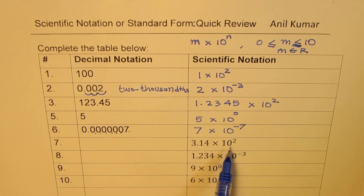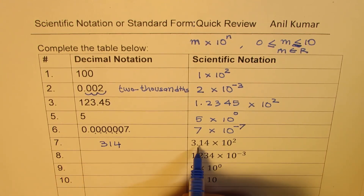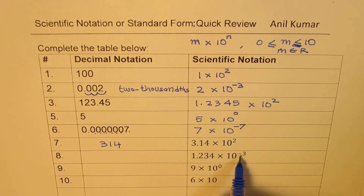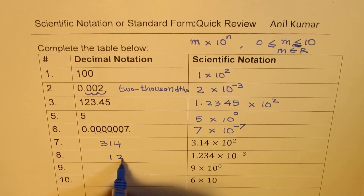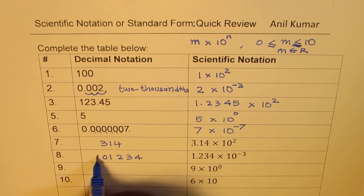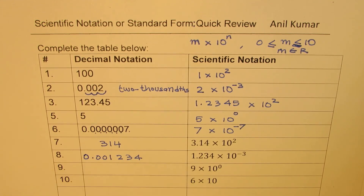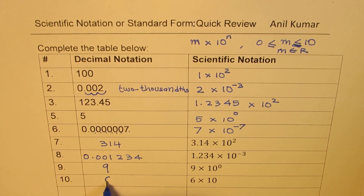Now let's do the reverse — writing them back into decimal notation. 3.14 times 10 to the power of 2, which means 100, so that'll be 314. Two decimal places the decimal moves. Minus 3 means the decimal moves towards the left, making it smaller. You move it one place, then two more places, giving two more zeros. 9 times 10 to the power of 0 is the number 9, just as we did with 5. 6 times 10 is the number 60. I hope you have got the concept.